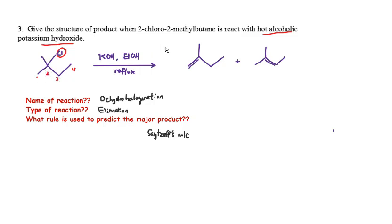If you remove the hydrogen from carbon one and the Cl from carbon two, this gives the minor product. If you remove the Cl from carbon two and the hydrogen from carbon three, you get the major product. According to Zaitsev's rule, the more highly substituted alkene is the major product. If you'd like to revise dehydrohalogenation reactions, refer to the topic of preparation of alkenes in Chapter 5.2.